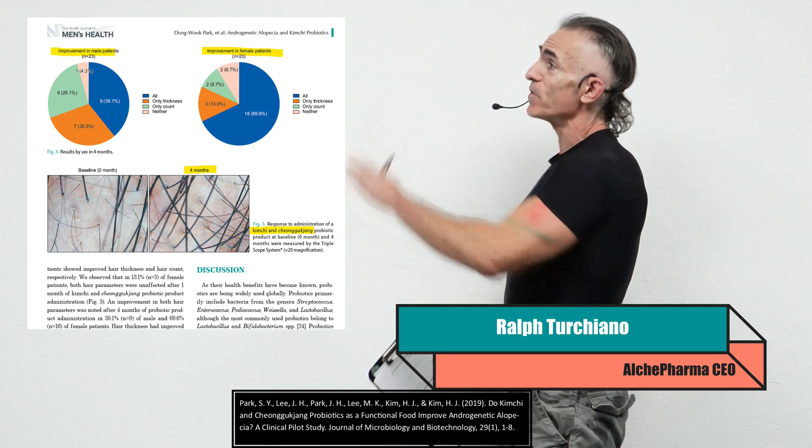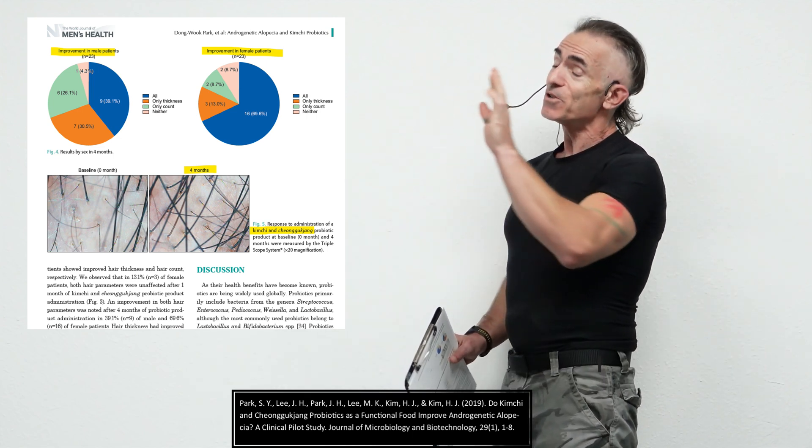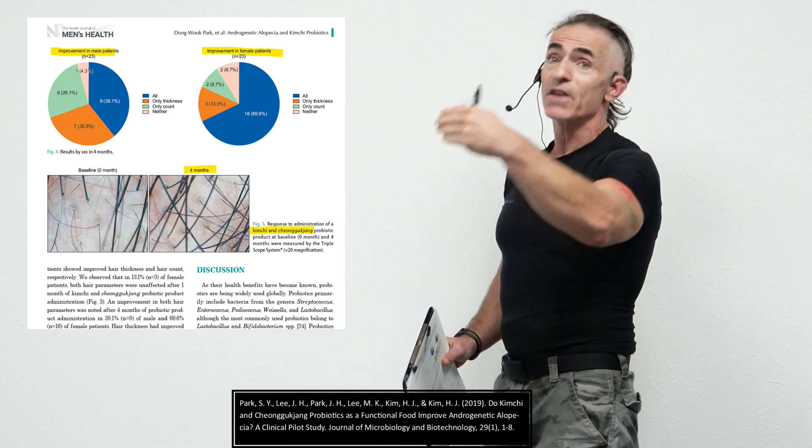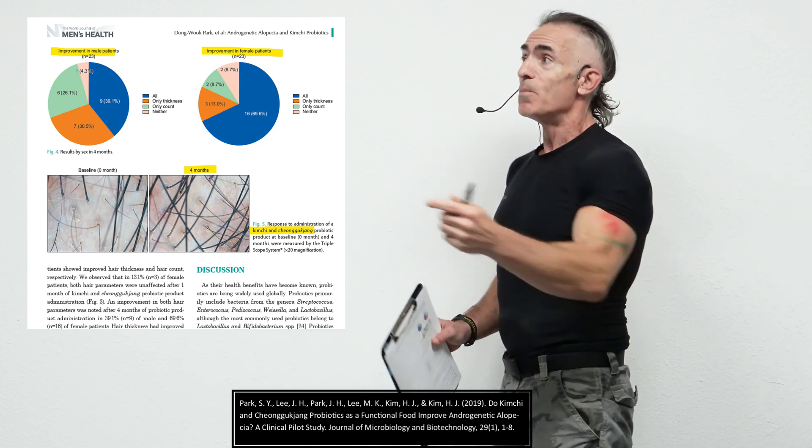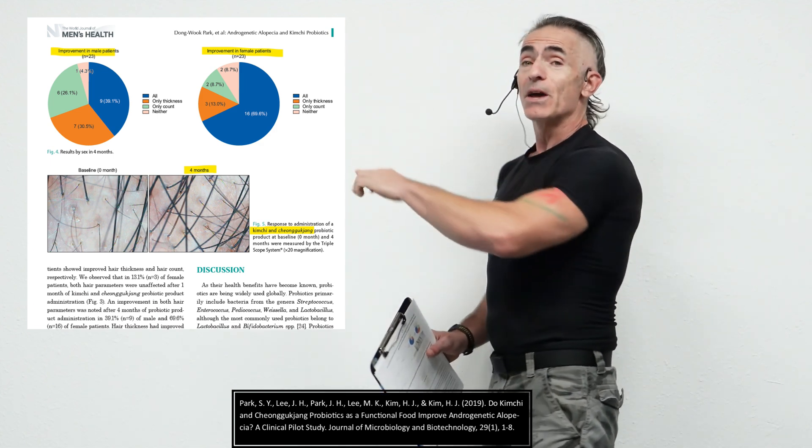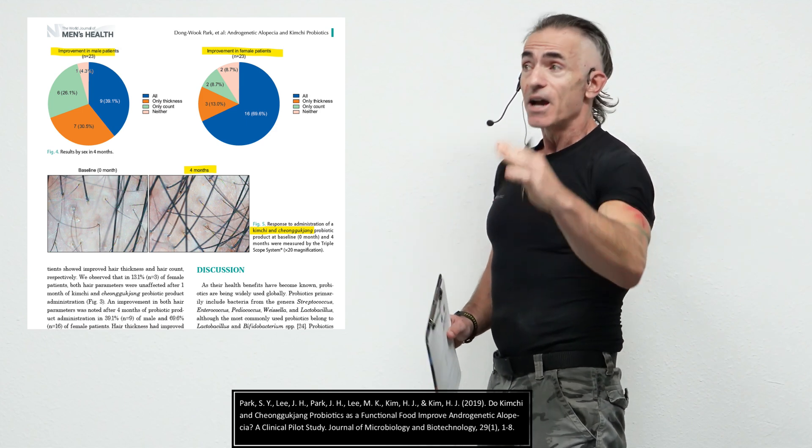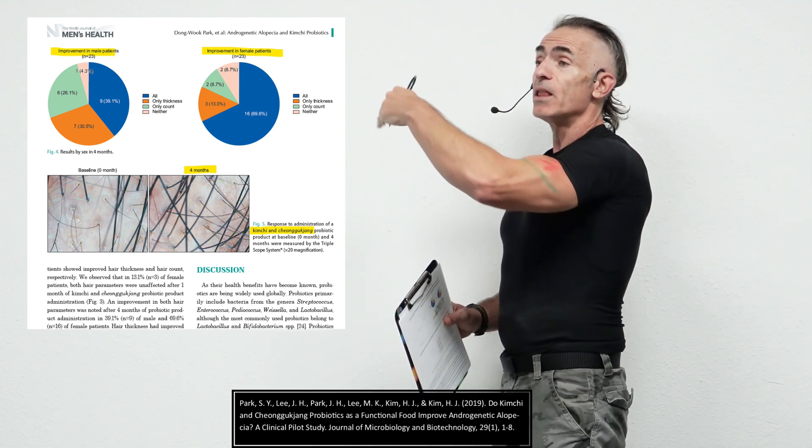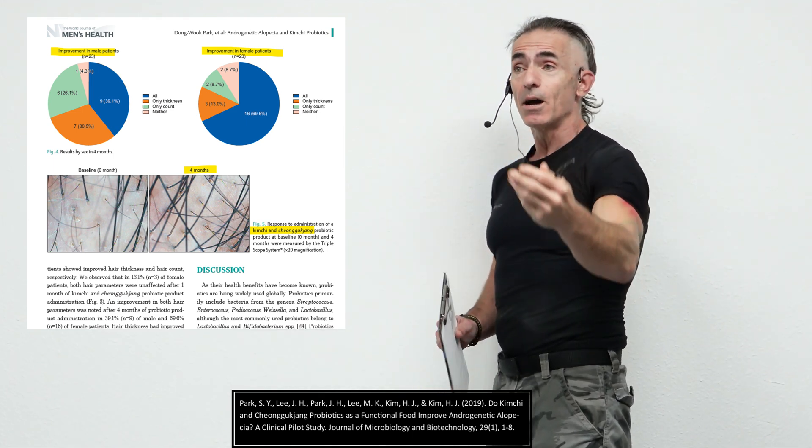So let's bring our attention right to this chart right here. The interesting part about it is look at the small part of the chart where people have received no results after a month to four months. But look at all the people that received positive results. And of course, a little graphic, look at the picture as far as the thickness of the hair, and the more hair follicles growing as well on the scalp.